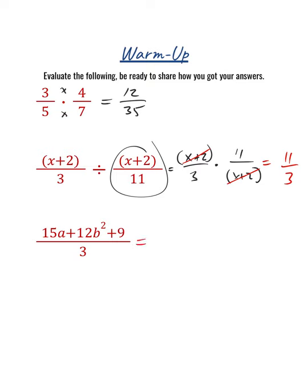One additional piece to look at is situations where we have really just simplification occurring — no multiplication or division. But if we look at this problem as three separate fractions: 15a over 3, 12b squared over 3, and 9 over 3, separating this out can be helpful because we can reduce each one individually.